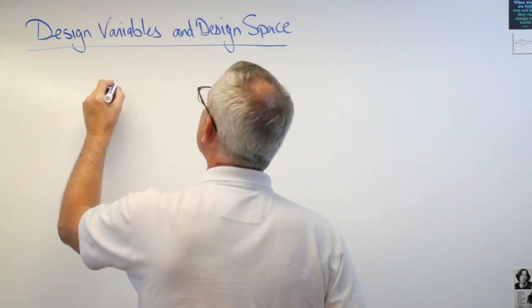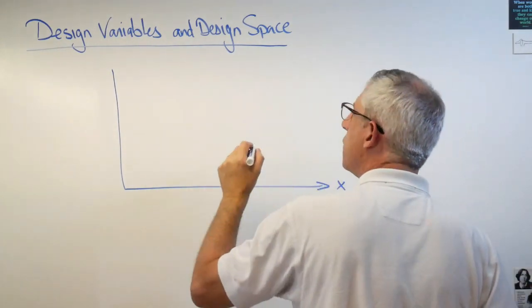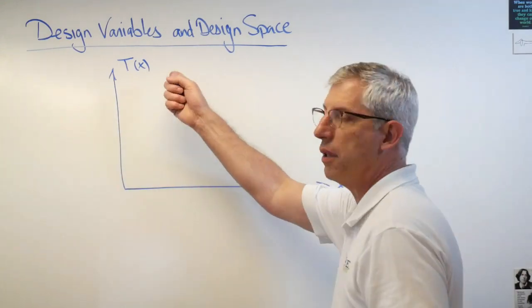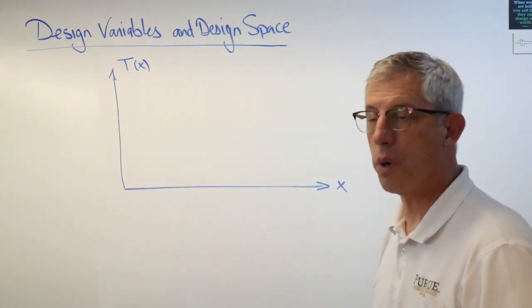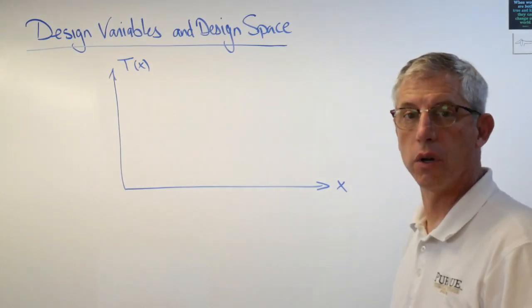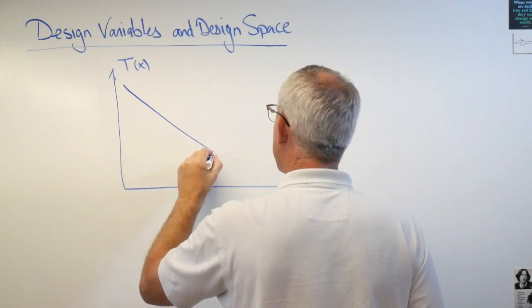And there's a variable, an independent variable that describes where the lifeguard gets in the water. And if you plot the time it takes the lifeguard to get to the swimmer against the position in which the lifeguard goes from the sand to the water, the curve looks kind of like this.